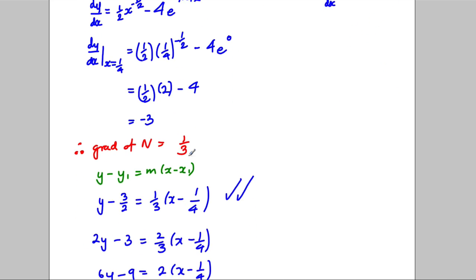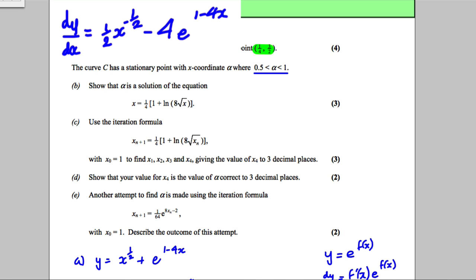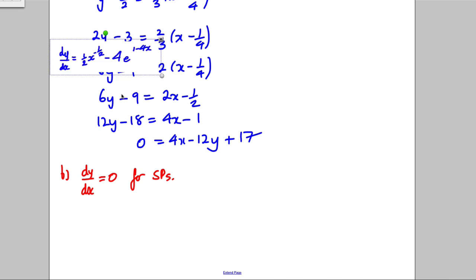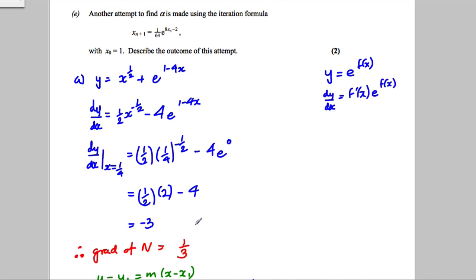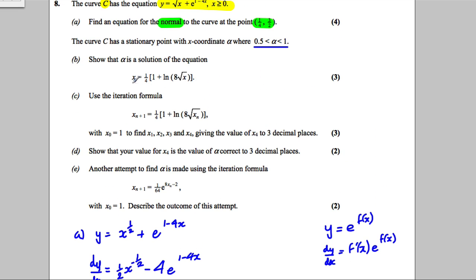Going back to our dy by dx which we already worked out, we set it equal to 0 and solve. Looking at what they want us to show: they want x as the subject of the formula with a natural logarithm and a root x in it. So we need to rearrange from dy by dx equals 0 to that form.